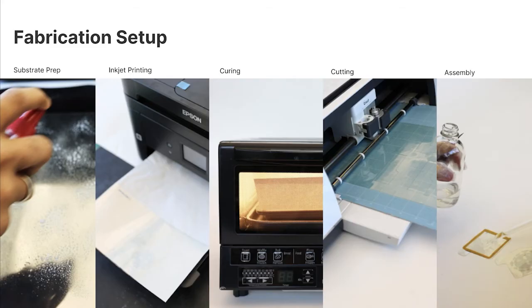Now, let's take a look at the fabrication setup that we used. All the equipment we used are daily craft tools that any designer can get access to. The overview of our process includes material preparation followed by printing and heat curing and then cutting and assembling the prototype.